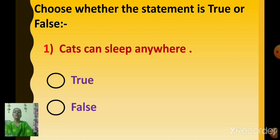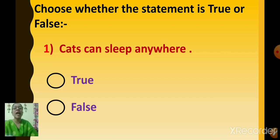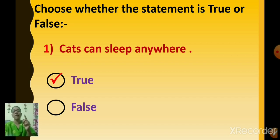Next question. The head question is changed. Choose whether the statement is true or false. If the answer is right, click on true; if the answer is wrong, click on false. The first one: cats can sleep anywhere. Do cats sleep anywhere? Yes — so you are going to click true. Cats can sleep anywhere; the answer is right, so click on true.